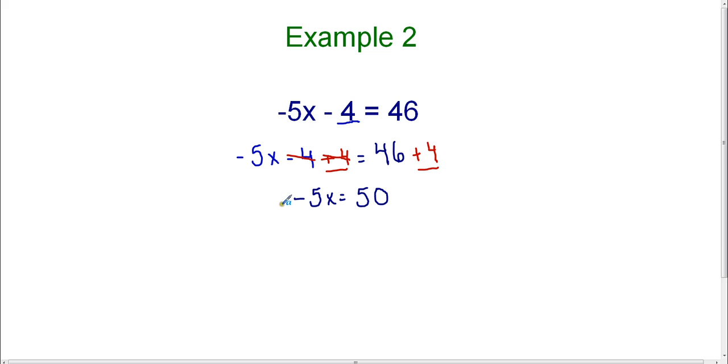Now this is now a one-step equation. I've completed one step and I have one more step to go. So now my goal is to get rid of this negative 5. This is the coefficient of x. We always get rid of the coefficient last. Since this technically says negative 5 times x, I need to use the opposite operation. So the opposite of multiply is to divide.